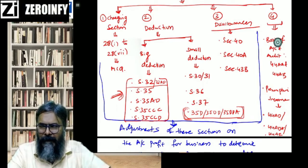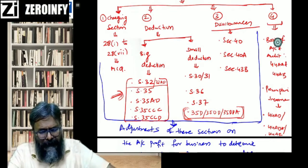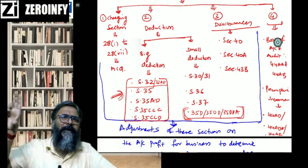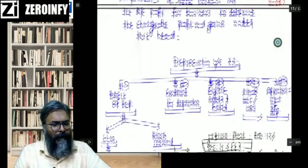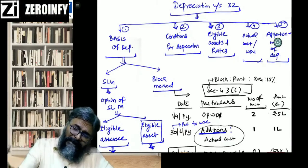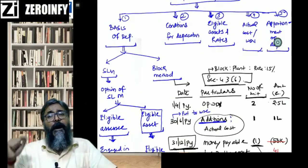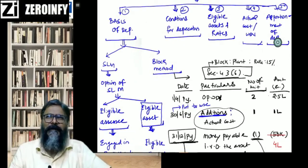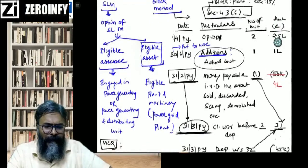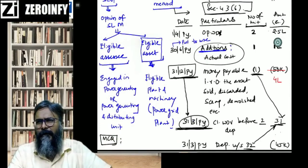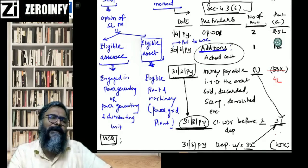The second part is the block scheme. Please remember that format: open WDV, add additions, less the money payable — meaning how much the buyer will pay for the asset sold, or if the asset is destroyed and insured, how much the insurance company will pay as compensation. We have seen various permutations and combinations to conclude whether depreciation will be eligible or result in short-term capital gain or loss.